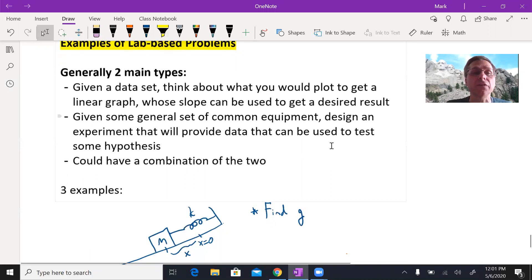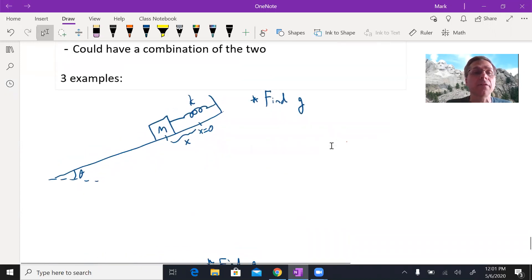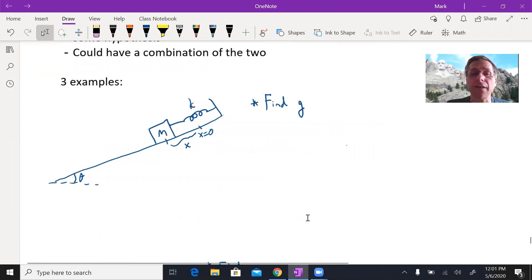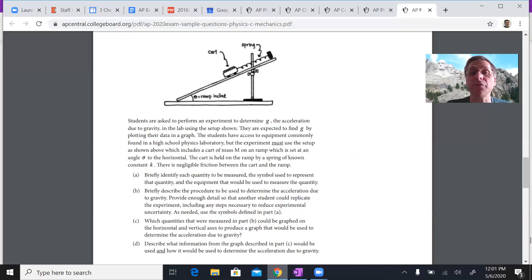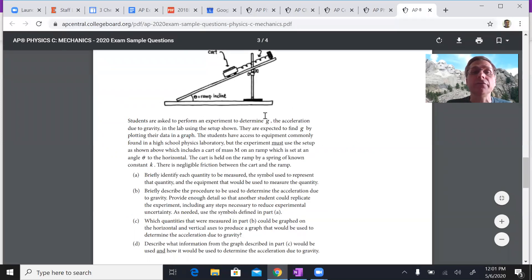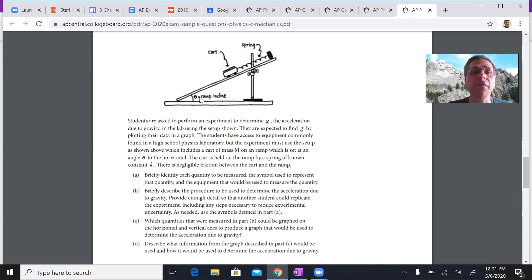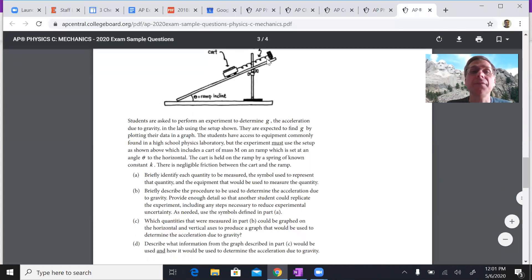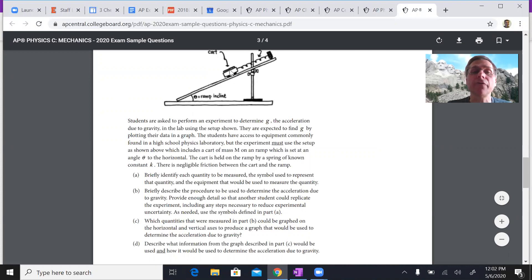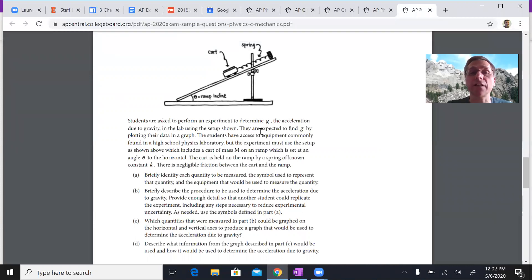I want to give three examples of these. And the first one is something that the College Board gave for the 2020 practice problem, lab practice problem for the AP exam. And it's a basic setup like this. It's a ramp that you hook up, and you can vary the angle of that ramp. And you have a spring that's supporting some mass, a little cart or something, so we don't have to worry about friction here. And from this experimental setup, they want you to figure out and get an experimental value of the acceleration of gravity, little g.